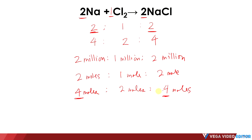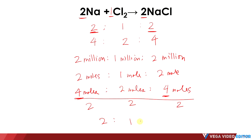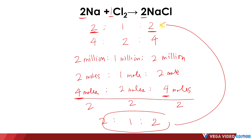Actually, if you simplify this ratio, we can divide all by 2: 2 over 2 is 1, and 4 over 2 is 2. So again, it's the same as the original ratio.